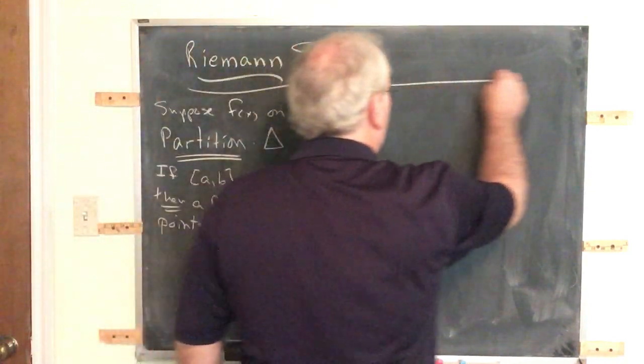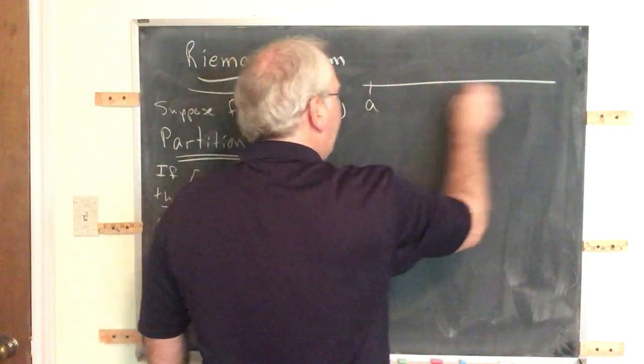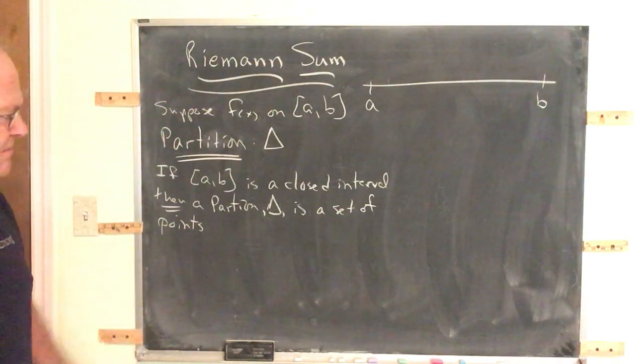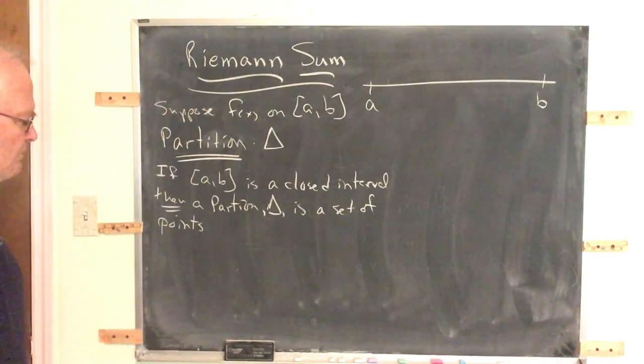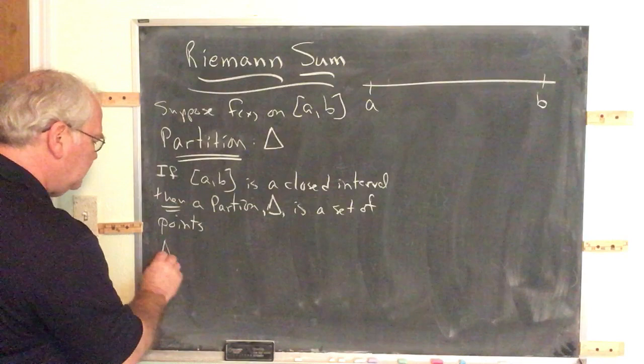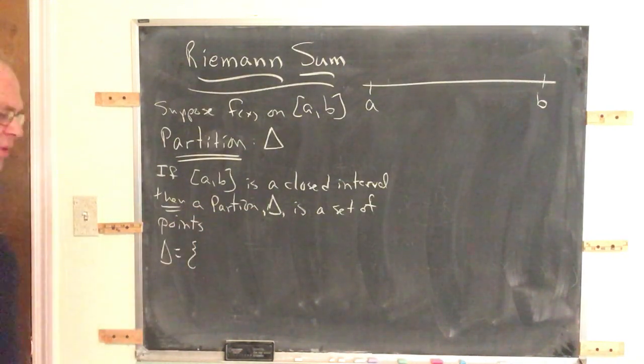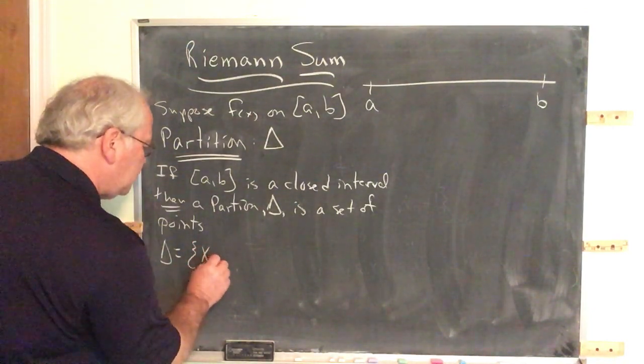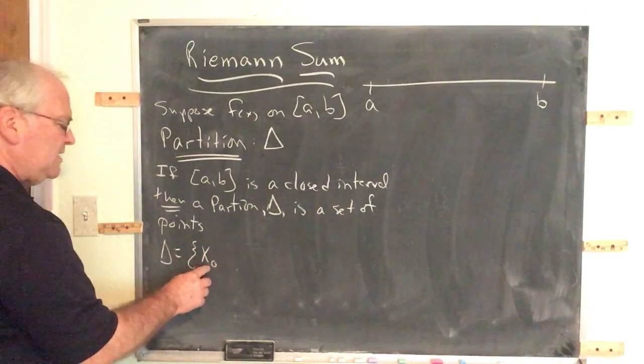What I'm going to do is I'm going to put a number line up here. Here's A, here's B. And I'll draw the picture alongside so this becomes very clear. Delta is a set of points. For reasons that become clear later on, we typically start numbering them x0.